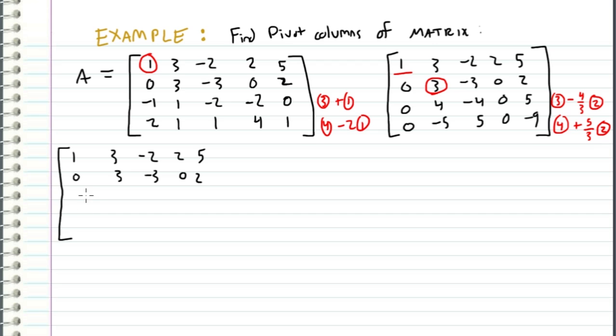We're taking row three and subtracting four thirds times row two. So we have a zero right here. And then we have four minus four thirds times three, which is a zero. And then we have negative four minus four thirds times negative three, which is also a zero. And then we have zero minus zero and five minus eight thirds, which is seven thirds.